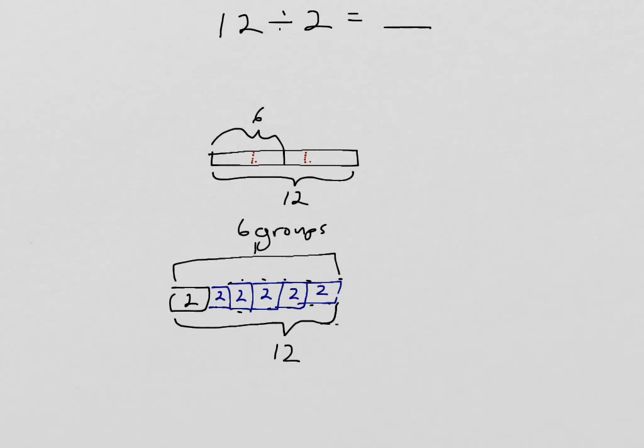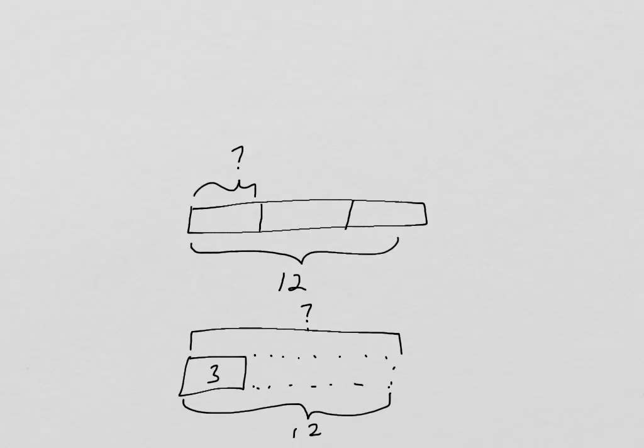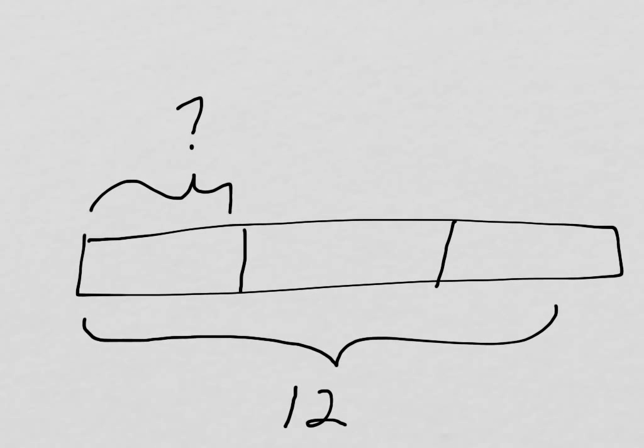This doesn't just work with 2's. It can work with any number. I've drawn two tape diagrams here. They both represent the same division problem. Can you figure out what it is? These tape diagrams are both representing 12 divided by 3. And we just have the two different interpretations. Let's zoom in on one of them.